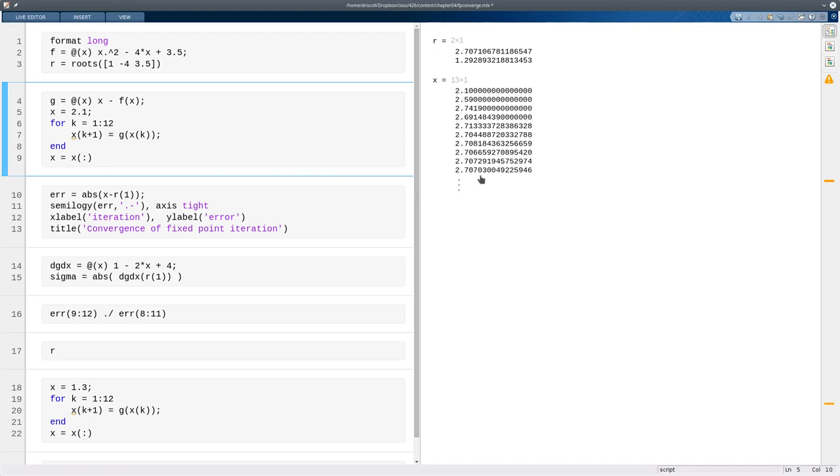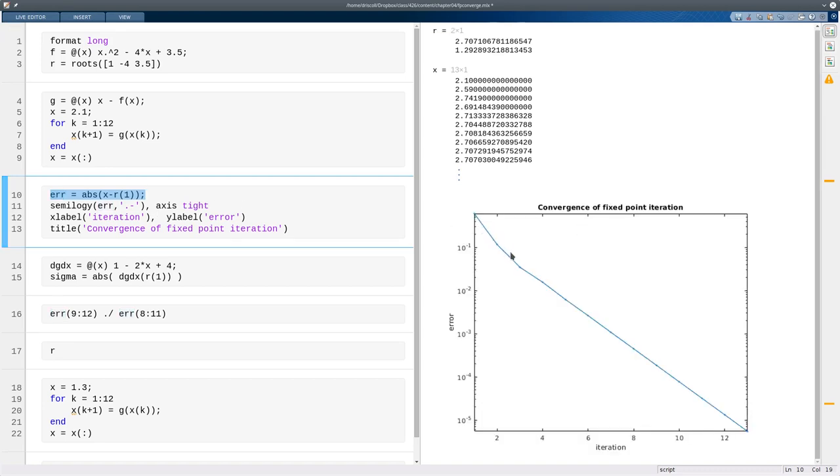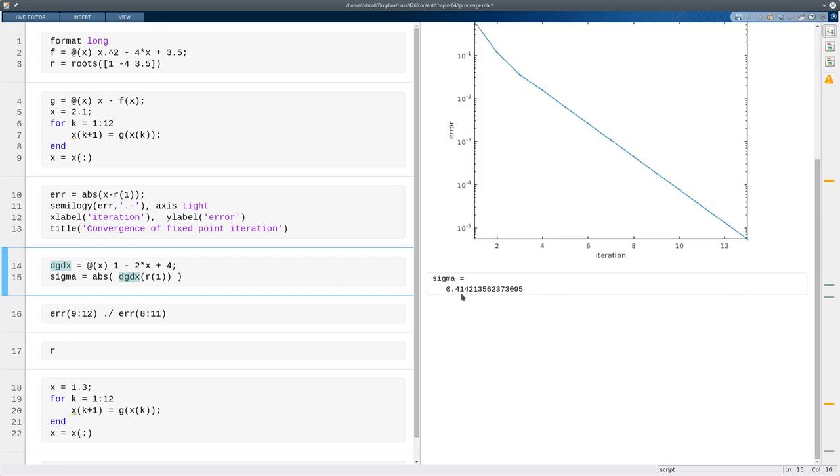And what we see is that it does seem to be converging to the root at 2.7. If I define the error sequence and plot that on a log linear scale, then we see that after the first few iterations it settles into what looks like a perfect straight line. So that is linear convergence, where the error goes down by a constant factor at each step. That factor comes from the derivative of g, so based on f and g above, I can define gdx and evaluate that at the fixed point. And when we take the absolute value, we call that sigma. So this is the amount by which errors should be reduced at each step.